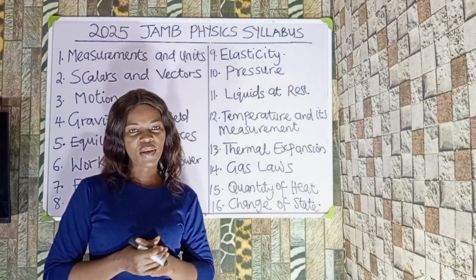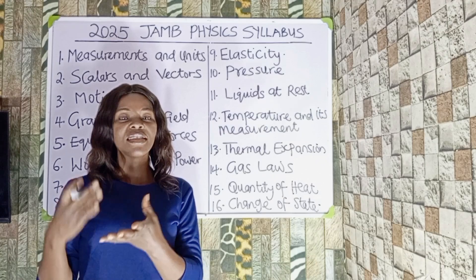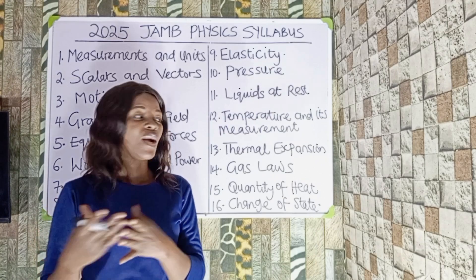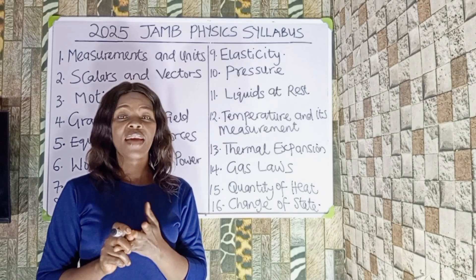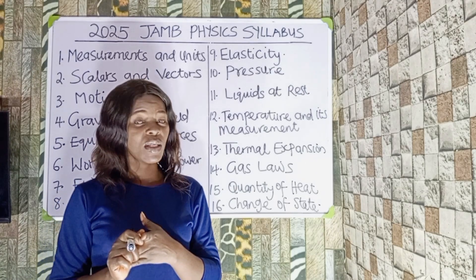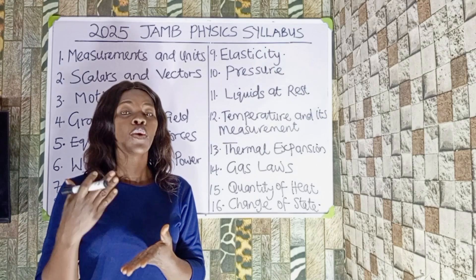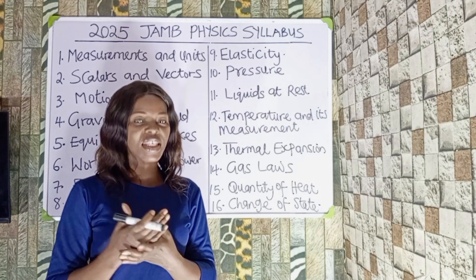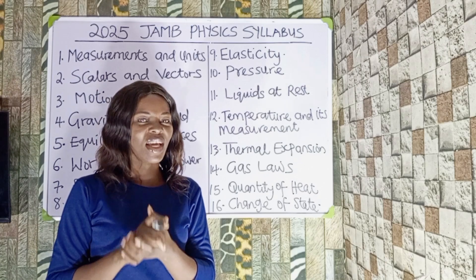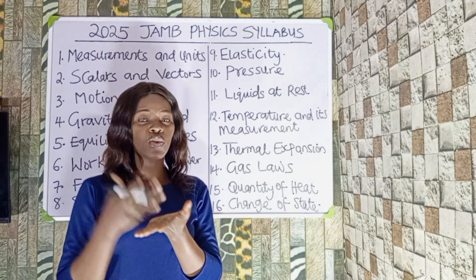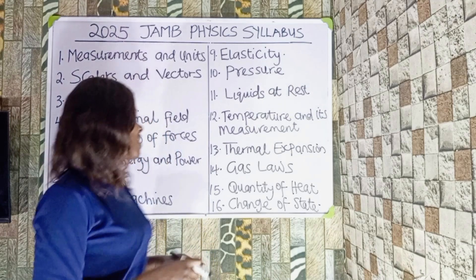Under thermal expansion we should look into linear expansivity and thermal expansivity — specifically linear expansivity, area expansivity, volume expansivity, cubic expansivity, real and apparent cubic expansivity, and also the anomalous expansion of water. All of these are enclosed under thermal expansion.